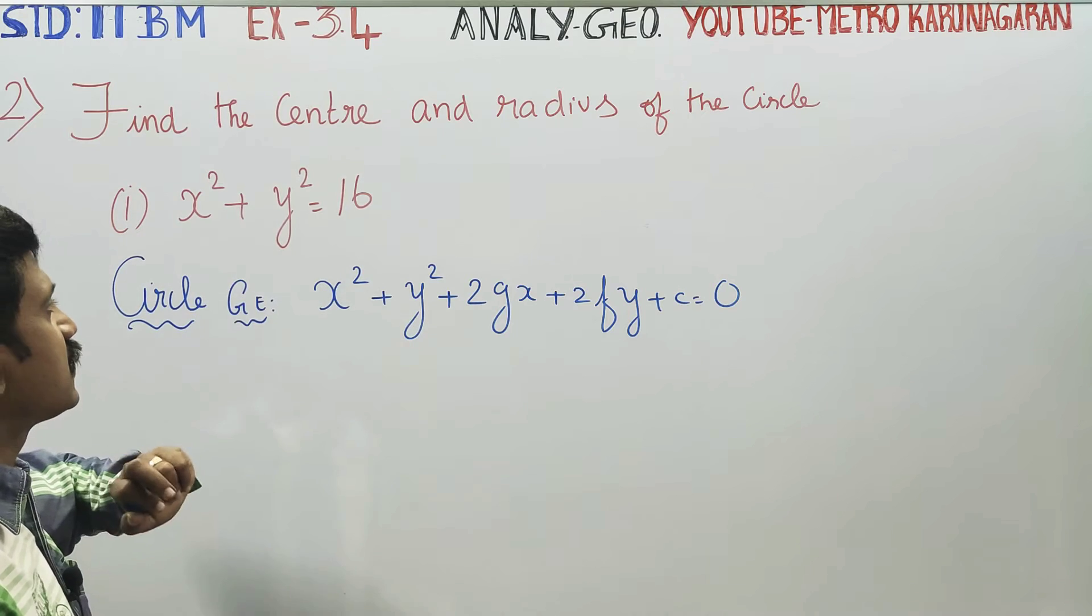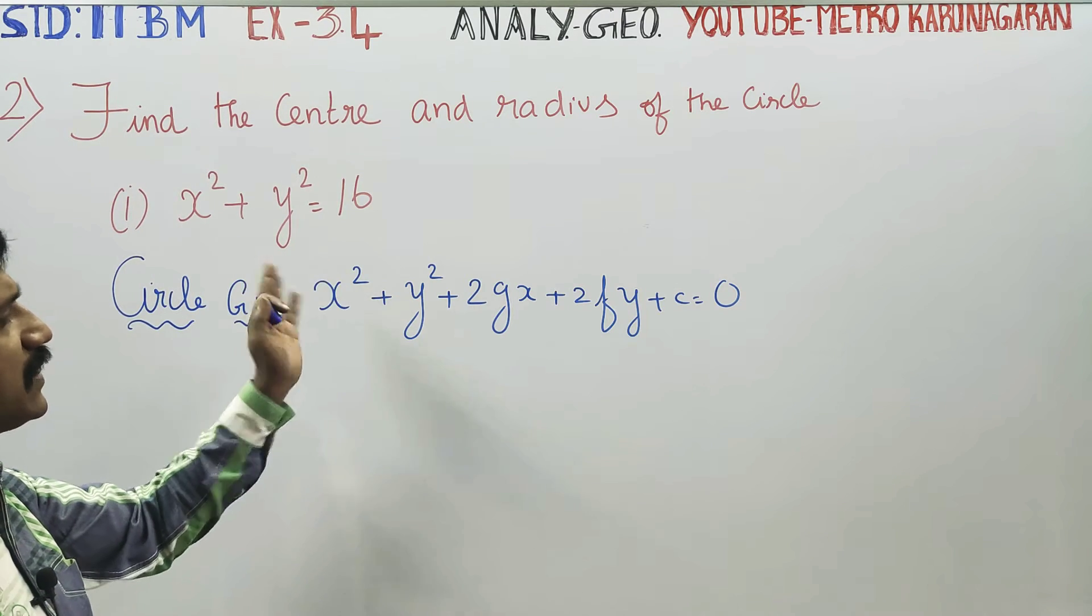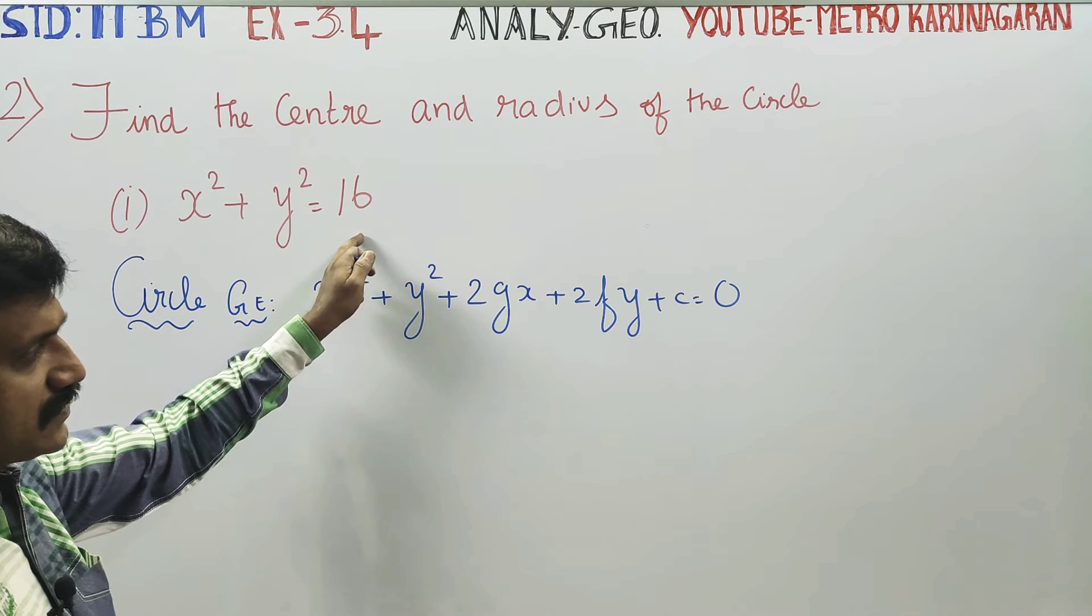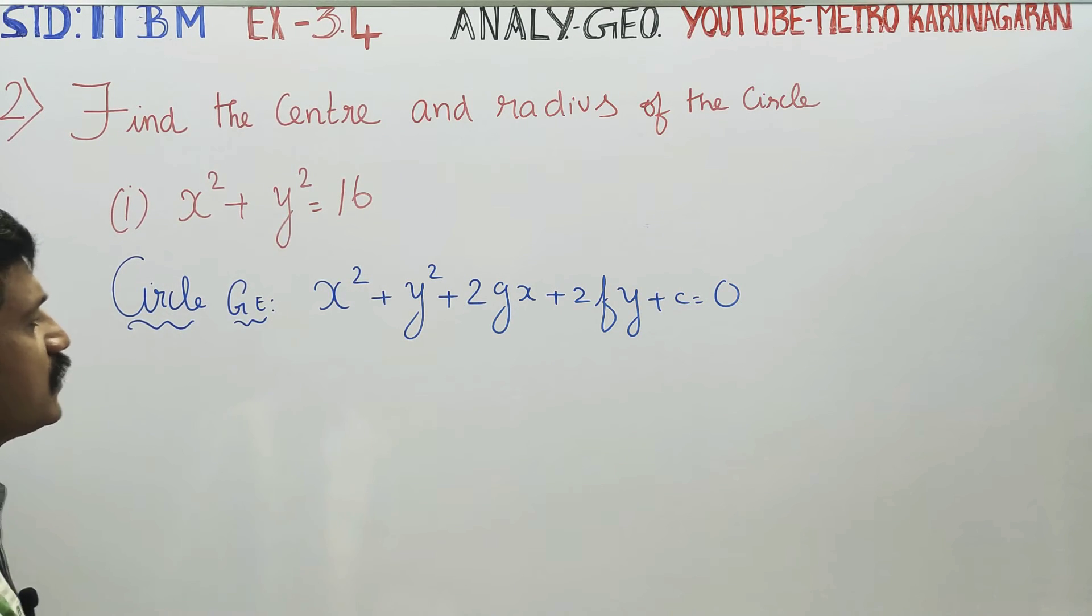x square plus y square, x term, y term, constant is equal to 0. Plus c, constant is equal to 0.